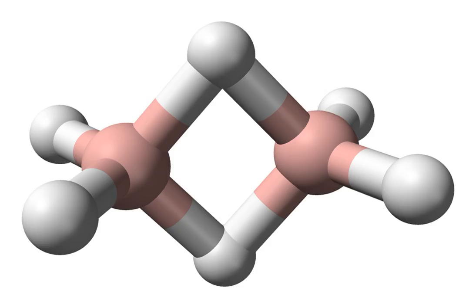Decane is an alkane hydrocarbon with the chemical formula C10H22. Although 75 structural isomers are possible for decane, the term usually refers to the normal decane, n-decane, with the formula CH3(CH2)8CH3.